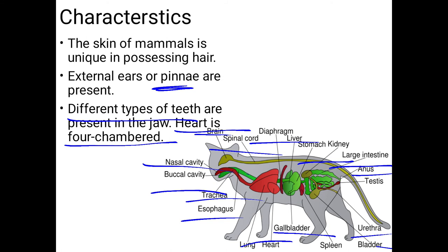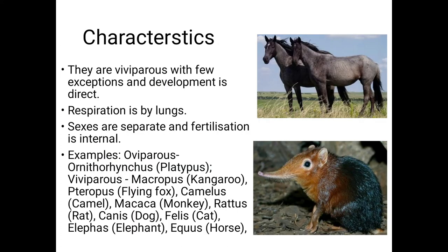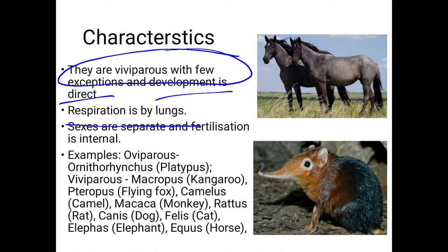You have studied all these points in your 10th class. Mammals are viviparous — they give birth to young ones directly, without laying eggs. Development is direct. Respiration is by lungs. Sexes are separate and fertilization is internal. Examples include kangaroo, flying fox, camel, monkey, cat, dog, rat, elephant, and horses.